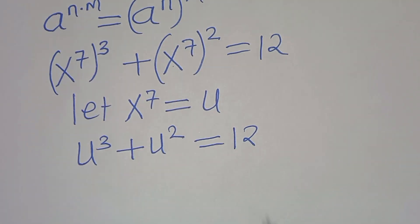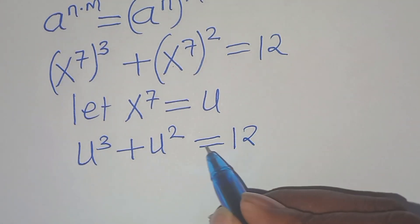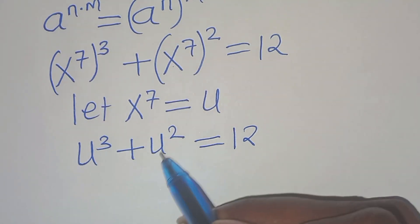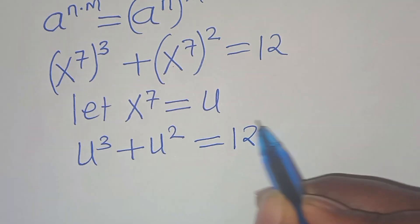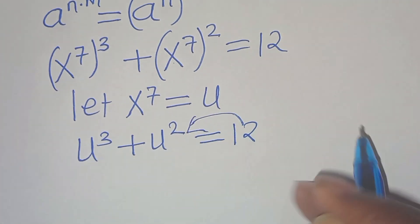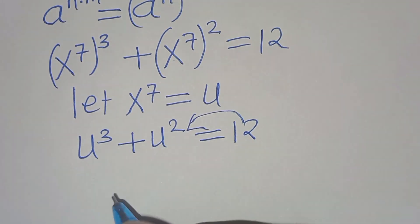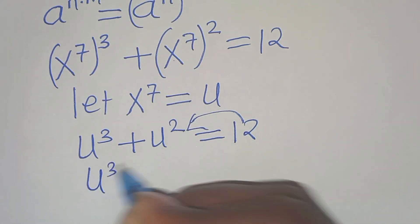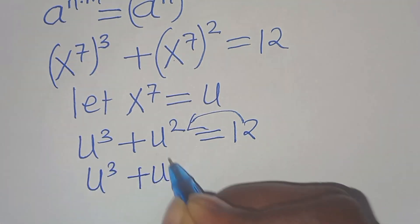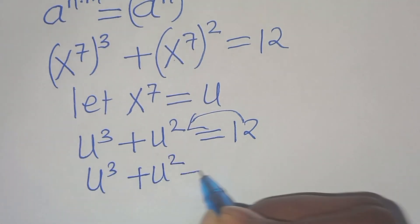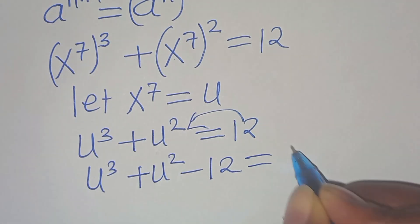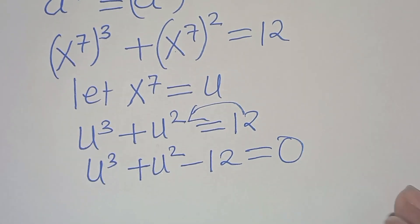Since x is a real number, we have u to the power of 3 plus u to the power of 2 equals 12. Moving 12 to the left-hand side gives us u to the power of 3 plus u to the power of 2 minus 12 equals 0.